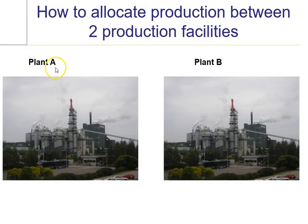You've got plant A, maybe it's in Atlanta. You've got plant B, maybe it's in Baltimore. And the company is trying to decide how to allocate production among plant A and plant B.